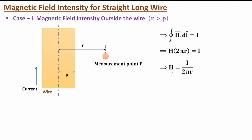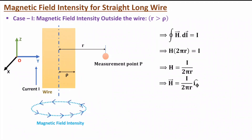The direction of magnetic field intensity is in the direction of phi in the cylindrical coordinate system. We have x, y, z coordinates where the z-axis is along the axis of the wire, and the magnetic field intensity is revolving in the x-y plane. Phi is the angle with respect to the x-axis in the x-y plane. So the direction of phi is the direction of magnetic field intensity, as it revolves according to the angle phi in the x-y plane.